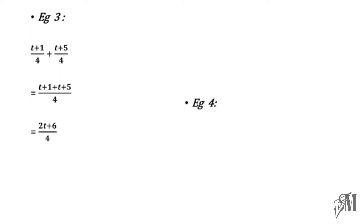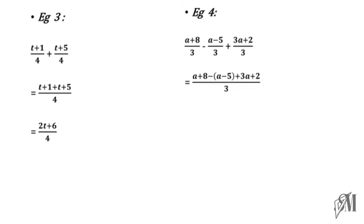The final example under this topic has denominator 3 and includes subtraction. When a subtraction comes among the fractions, you must write the expression after the subtraction sign within brackets. Here I have written (a + 8) minus, and the next part is put within brackets. When subtraction comes, this is a very important place where mistakes are made — you must write the expression within brackets, then in the next step remove the brackets by multiplying each term inside by the minus sign.